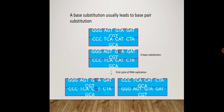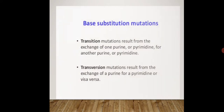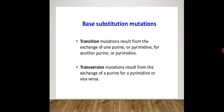A base substitution leads to base pair substitution or base pair replacement. You can see the red color shown in the diagram — the adenine which was the first one has been replaced by cytosine. Then further replication and transcription will occur and those changes will be carried forward. Base substitution mutations consist of two types: transition and transversion.